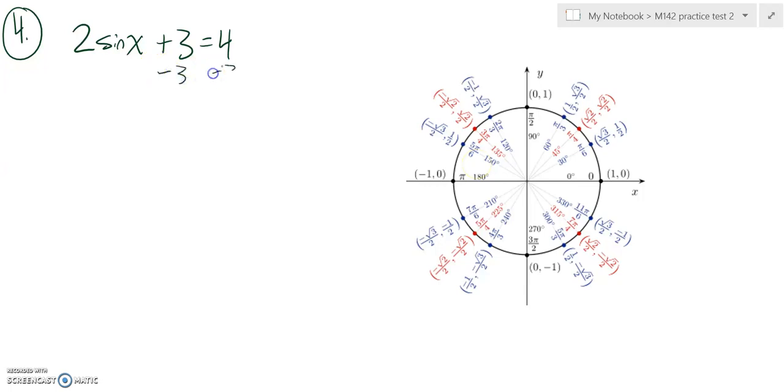So I'm going to subtract 3 from both sides. 2 sine of x equals 1. This is 2 times that, so I'm going to divide both sides by 2.